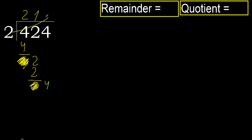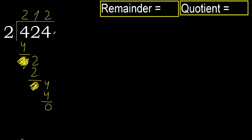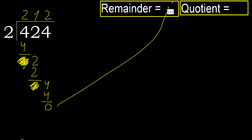Bring down 4. 2 multiplied by 2 equals 4, is not greater. Subtract: 4 minus 4 equals 0. Next, there is no more number, therefore finish.